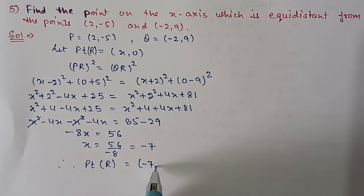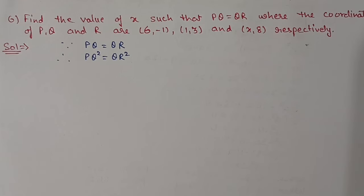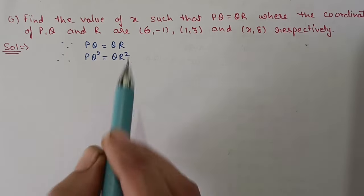Next, question number 6: Find the value of x such that PQ = QR, where the coordinates of P, Q, and R are (6, -1), (1, 3), and (x, 8) respectively. Given PQ = QR, we can write PQ² = QR², since if two numbers are equal their squares are also equal. Now we will apply the distance formula.